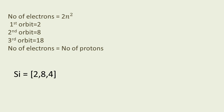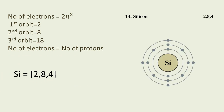Let us see this with the help of an example — we will consider silicon. Silicon has atomic number 14. First orbit can hold 2 electrons, second orbit can hold a maximum of 8, so 2 plus 8 equals 10, and the remaining 4 go into the third orbit. Therefore the electronic configuration of silicon becomes 2-8-4, as we can also see in this diagram with two electrons in the first orbit, eight in the second, and four in the third.